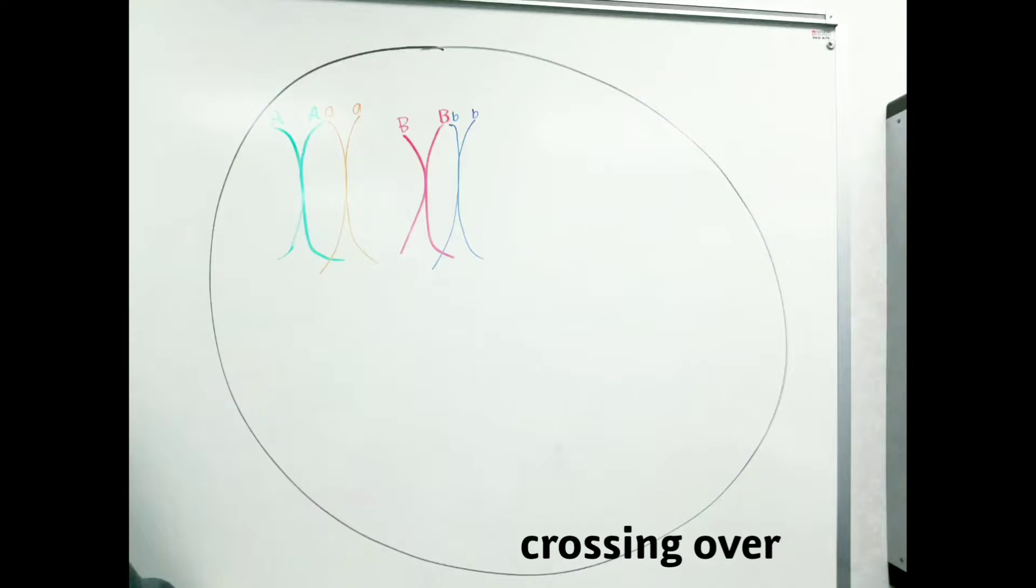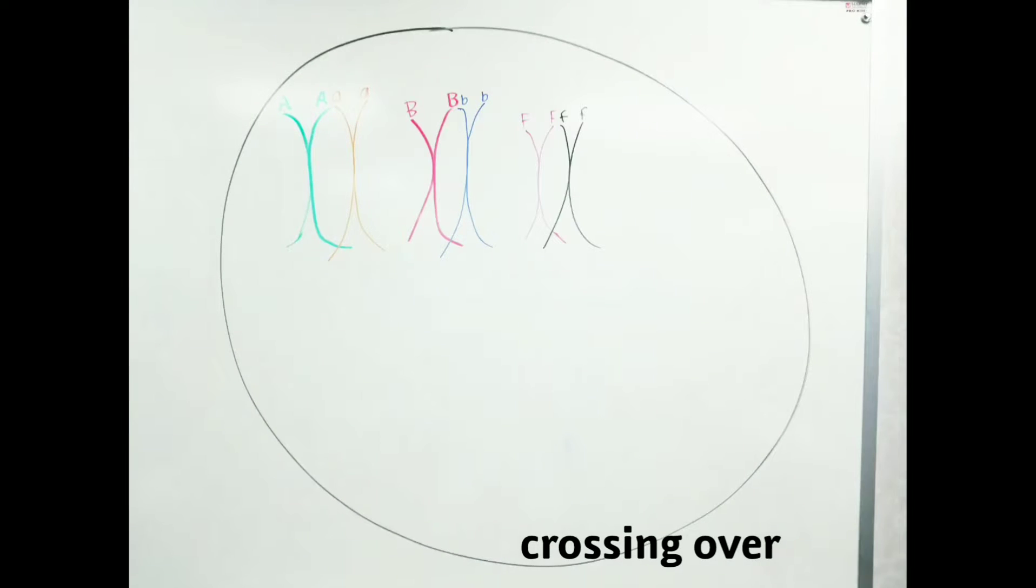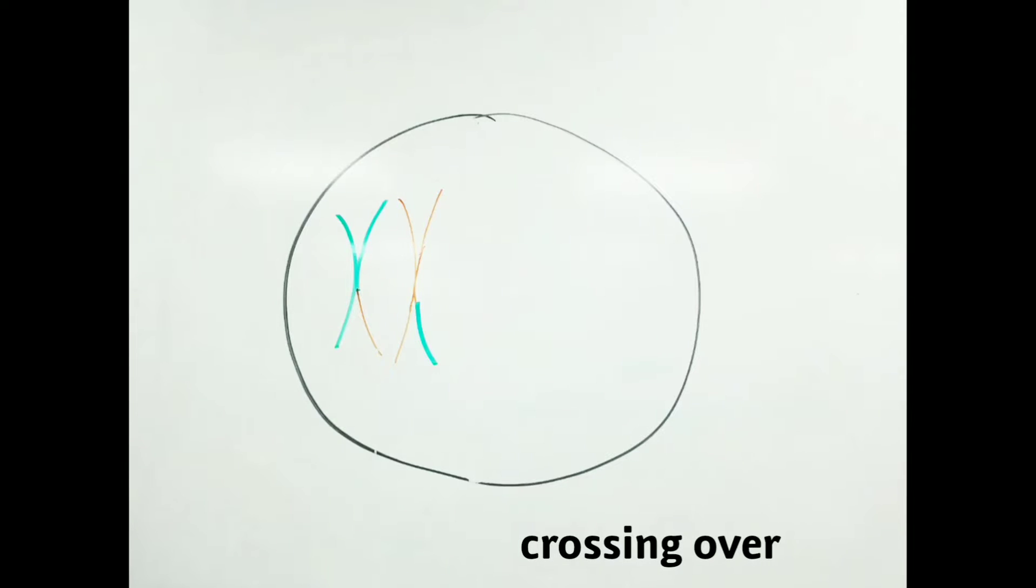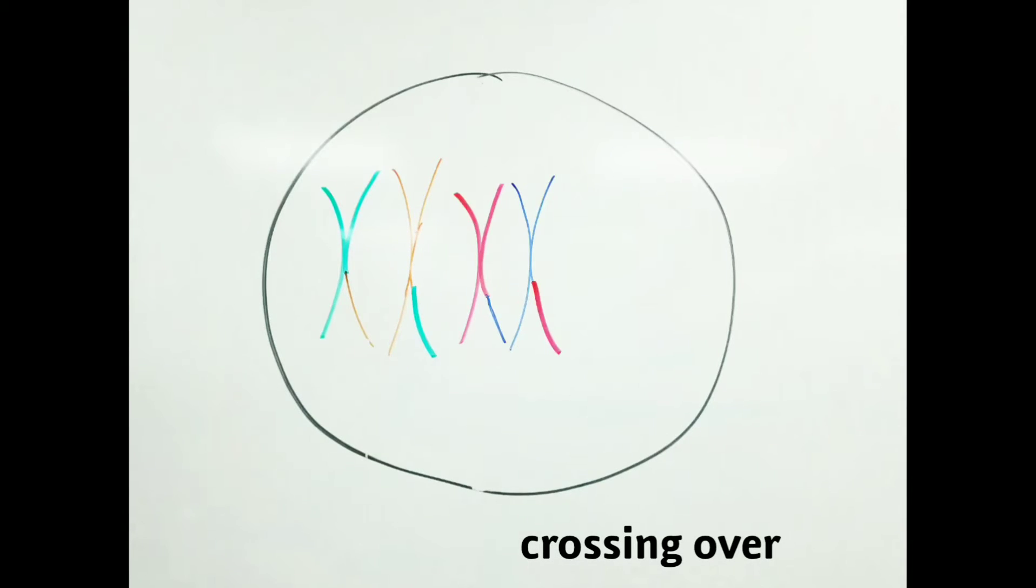In order to increase genetic variety, crossing over occurs. During crossing over, the homologous pairs combine, and a sister chromatid of each pair exchange a piece of genetic material.